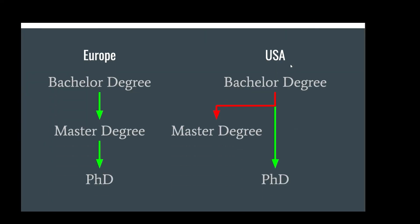In this slide, you can see the difference between Europe and the USA. In Europe, you complete a bachelor's degree, then a master's degree, and then apply to a PhD. In the USA, you can apply directly to a PhD program after a bachelor's degree. You can also apply to a master's scholarship before a PhD in the USA.